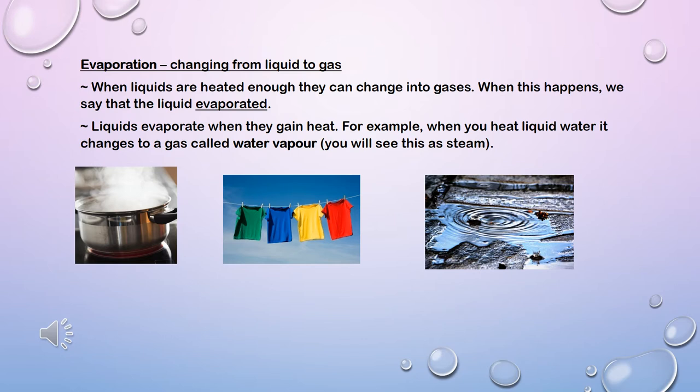Another example of evaporation in our everyday lives is drying of clothes. When we hang the clothes they are wet, but after a couple of hours the clothes are dry. This happens because the water from the clothes has evaporated. Have you noticed that after it rains there are puddles all over? When the Sun comes out these puddles slowly disappear. The water in the puddles evaporated into the atmosphere with the help of the Sun.